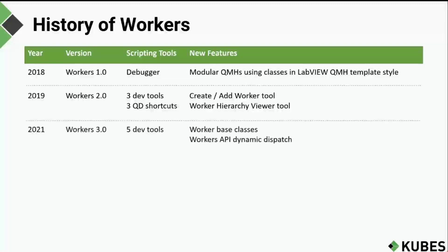In 2021, Workers 3 was released. A few more dev tools were added, but this release focused mainly on allowing developers to inherit their workers from custom worker-based classes where they could add common features. This version also included a new sample project demonstrating how to create applications with a custom base class, and the Workers API was reworked with all public API VIs becoming dynamic dispatch VIs, allowing developers to override and extend the framework's public API.